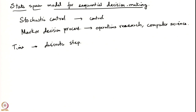It is assumed that anything that happens between two time steps is not completely accessible to us — what we know is only what happens at the edges of the time steps. Time evolves in discrete steps, denoted by k, where k ranges from 0, 1, ... up to N minus 1, where N is some finite integer.